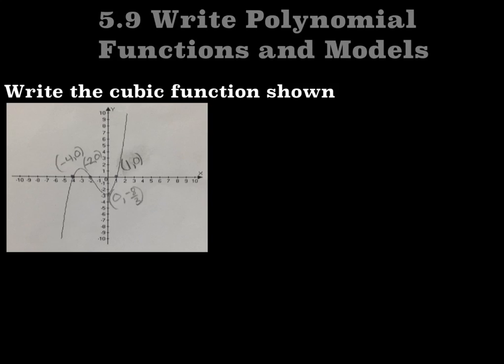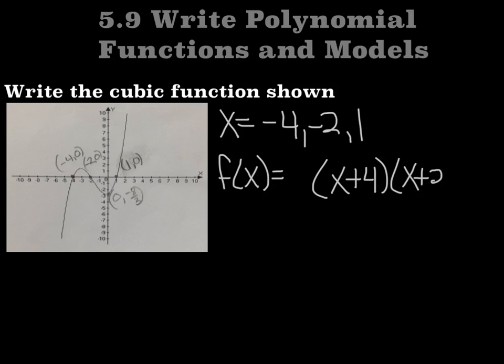So here's a graph, and I'm asking you to write the cubic function that is shown. This graph I've given you lots of points, and you can pull out the three zeros: x equals negative 4, negative 2, and positive 1. When you know the zeros, you can write the factors. We have f(x) equals, and then we have a factor of x plus 4, a factor of x plus 2, and a factor of x minus 1.